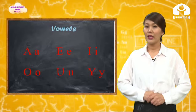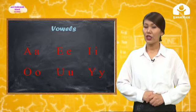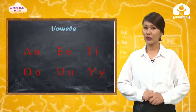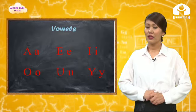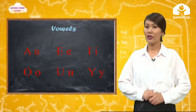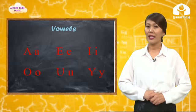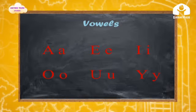So, in English we have 26 letters. Six are vowels and 20 are consonants. The vowels are A, E, I, O, U, Y. Look and say again: A, E, I, O, U, Y.